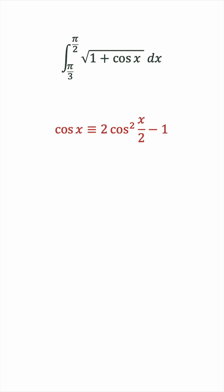Now if we take 1 to the other side, then we have an expression for 1 plus cosine x in terms of cosine squared. So let's replace it by 2 cosine squared x over 2.